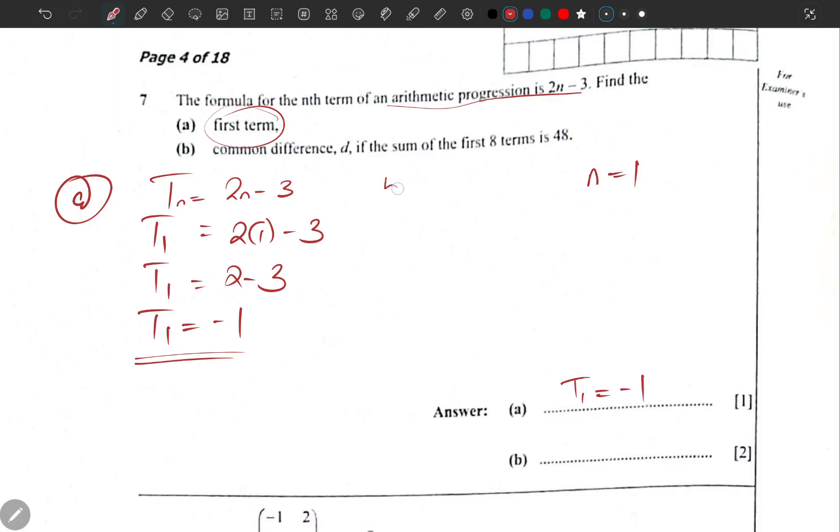Part b: common difference, if the sum of the eight terms is 48. If the sum is 48 for the eight terms, what is the common difference? Sum is n/2 times (2a + (n-1)d). So the sum is 48, n is 8: 8/2 times (2a + (8-1)d). Our first term is negative 1, that's what we are putting there as a, plus n is 8 minus 1, and d is what we are looking for.